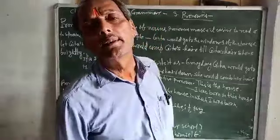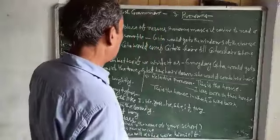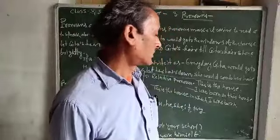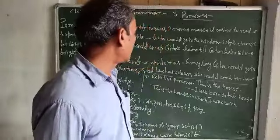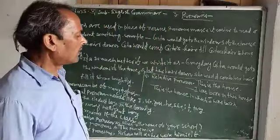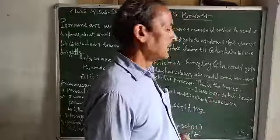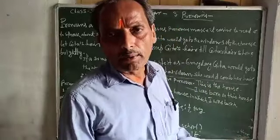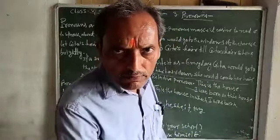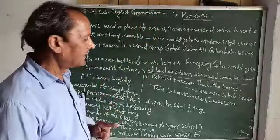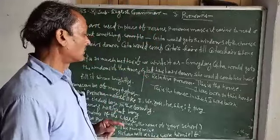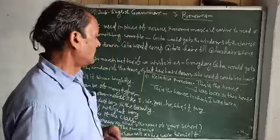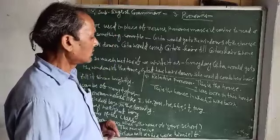The fifth type is the relative pronoun. For example, take two sentences: 'This is the house.' and 'I was born in this house.' We combine these two sentences and make one: 'This is the house in which I was born.' Here the relative pronoun is 'which'.